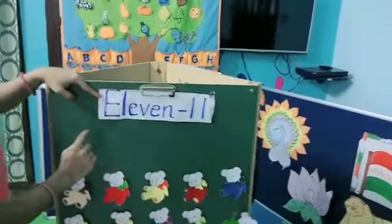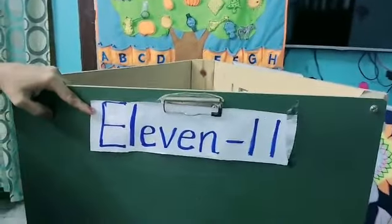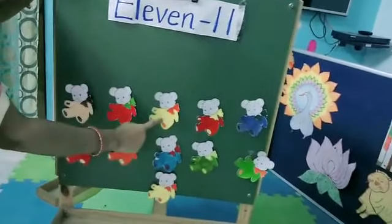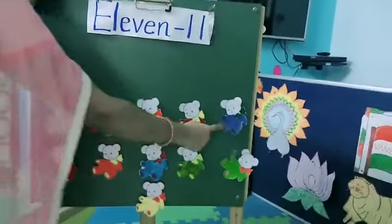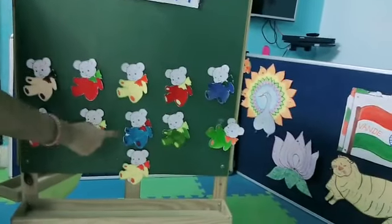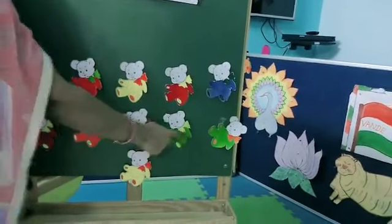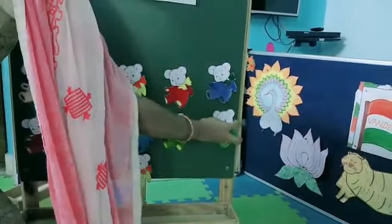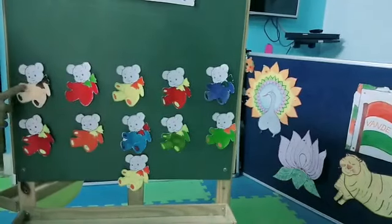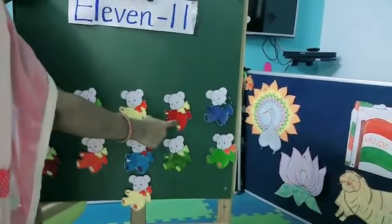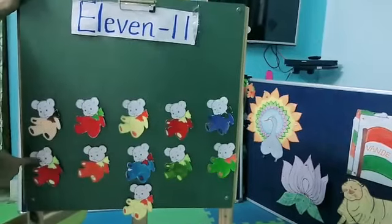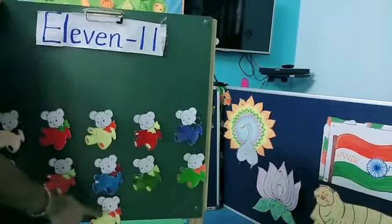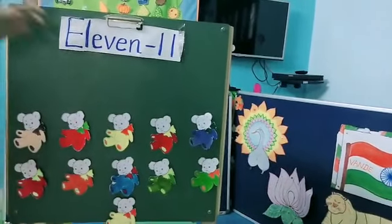Let's recall once again. See — 11 means how many objects will come. See here: 1, 2, 3, 4, 5, 6, 7, 8, 9, 10, 11. Let's count once again. 1, 2, 3, 4, 5, 6, 7, 8, 9, 10, 11. See the spelling once again.